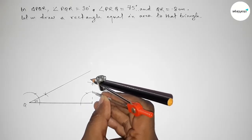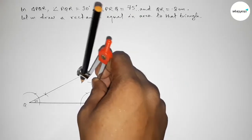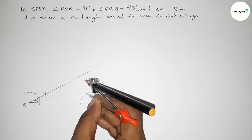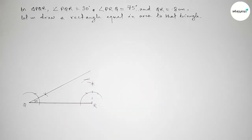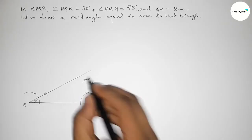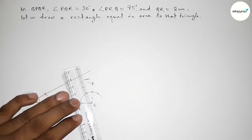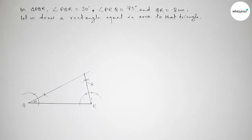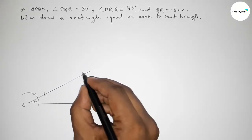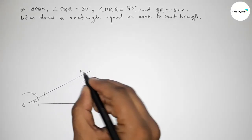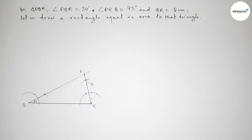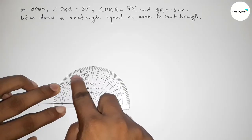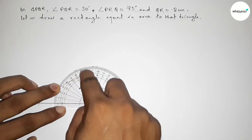Next, we have to bisect the angle between 60 and 90 degrees to get 75 degrees. Putting the compass here, taking any length, drawing an arc, then putting the compass here and cutting here. Both curves intersect at a point. Joining this line and taking point P. Checking this angle — this is perfectly a 75 degree angle.